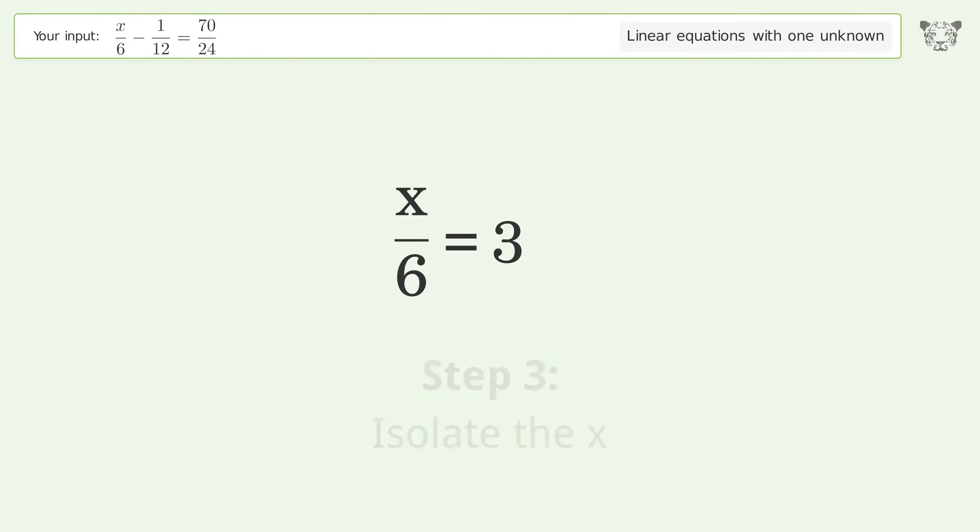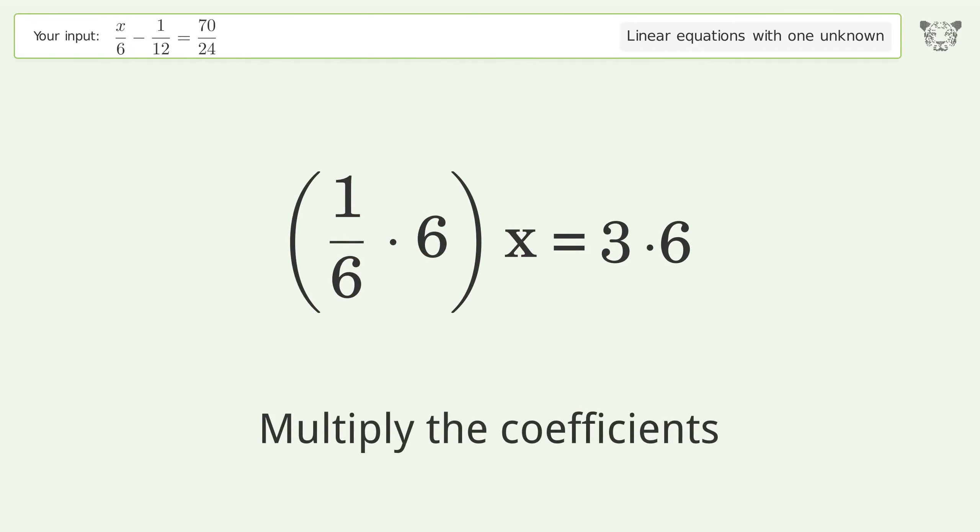Isolate the x. Multiply both sides by 6. Group like terms. Multiply the coefficients.